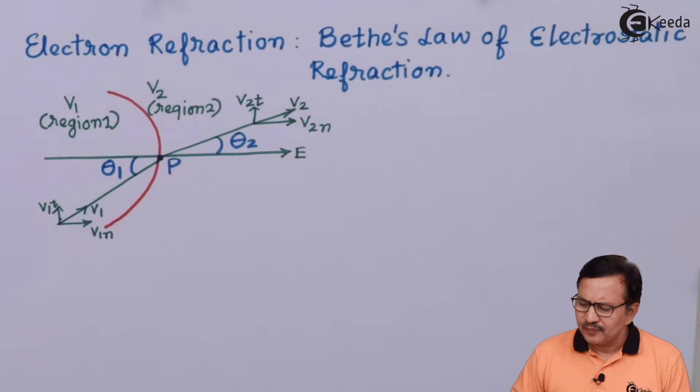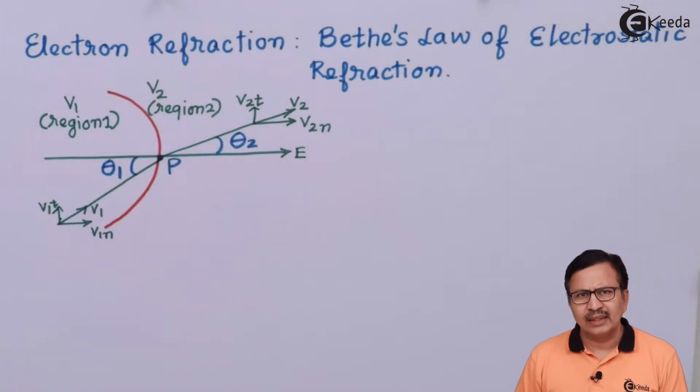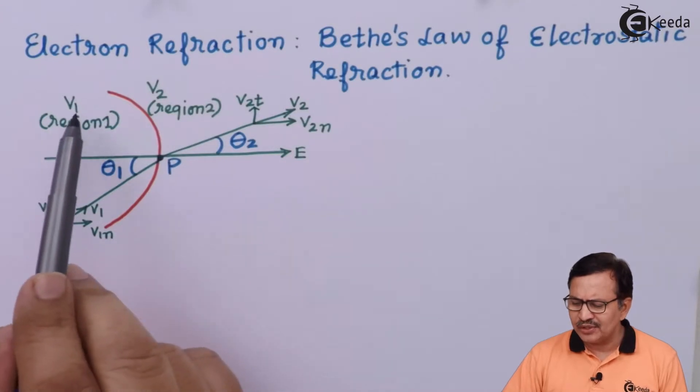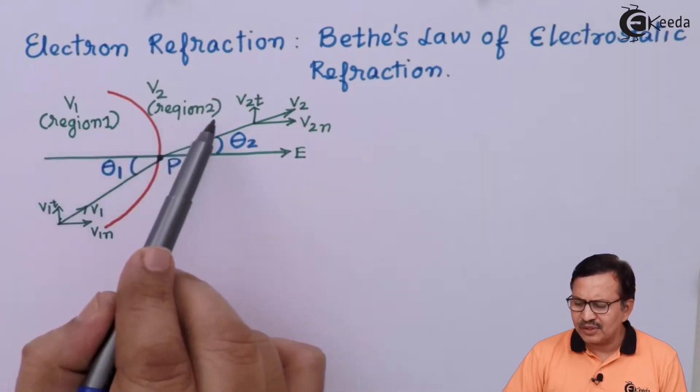Consider the following figure. We have an equipotential surface that separates two potentials V1 and V2, wherein V2 is greater than V1. So this is region 1 and this is region 2.